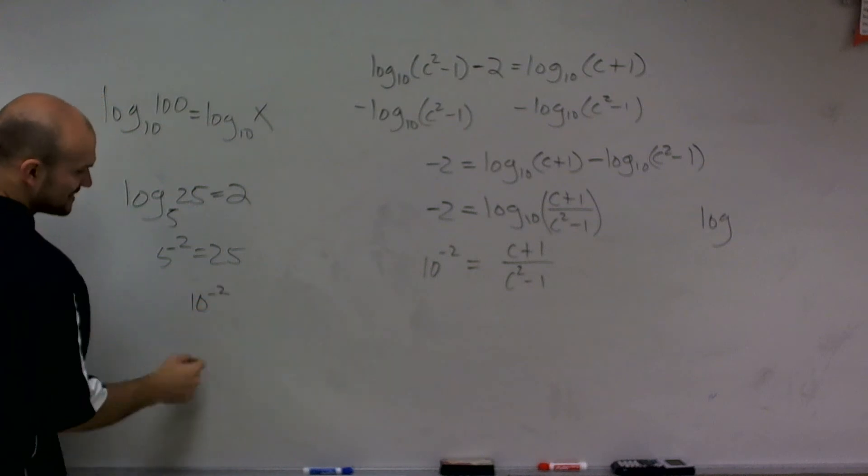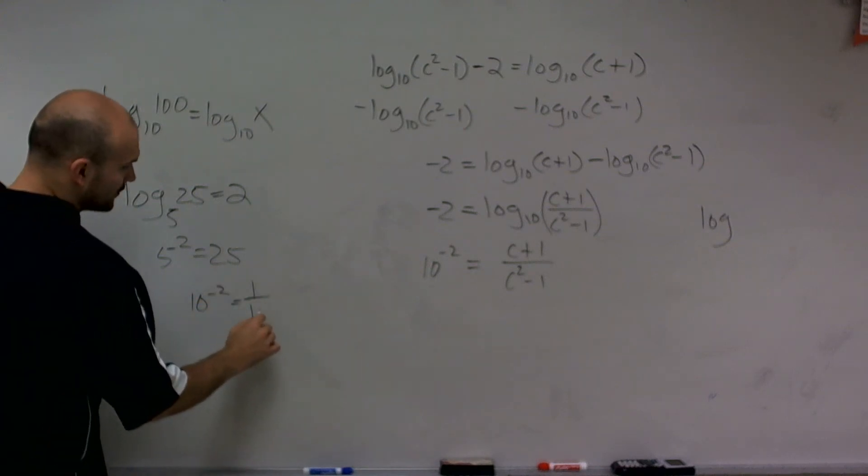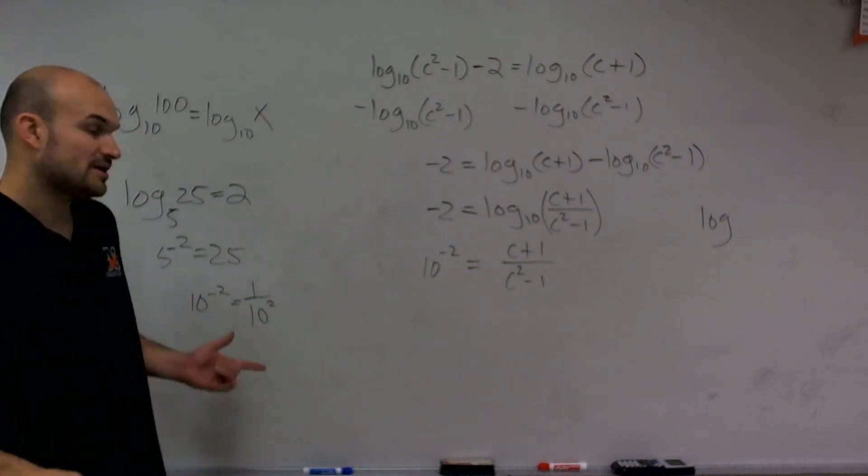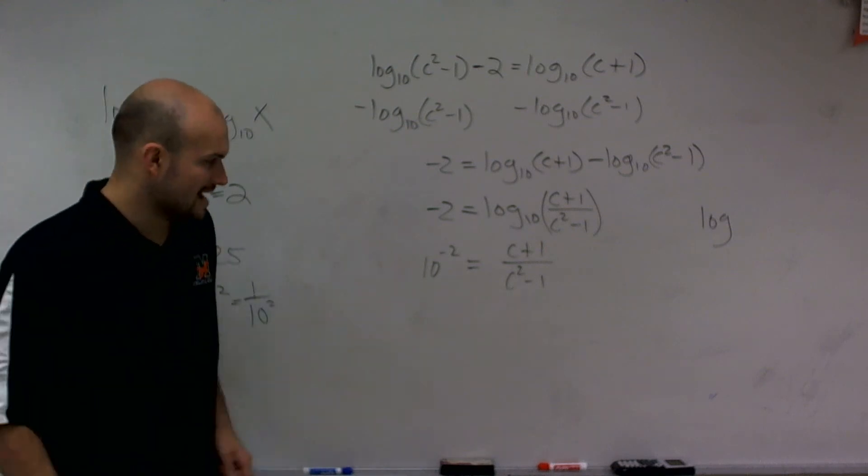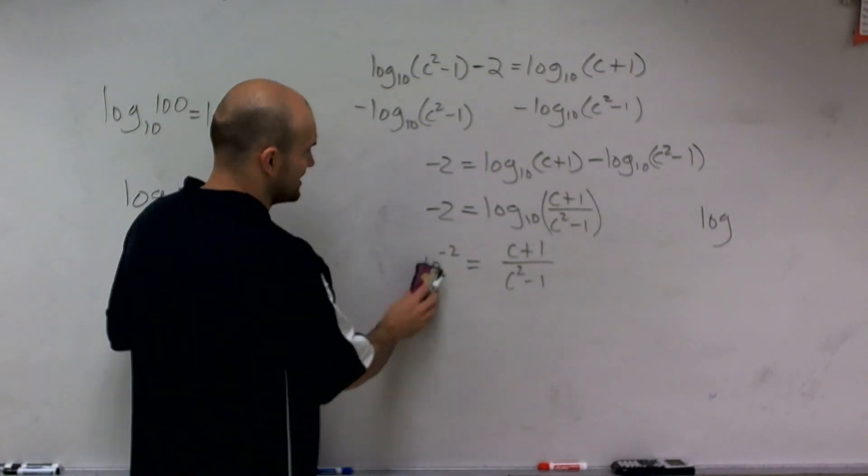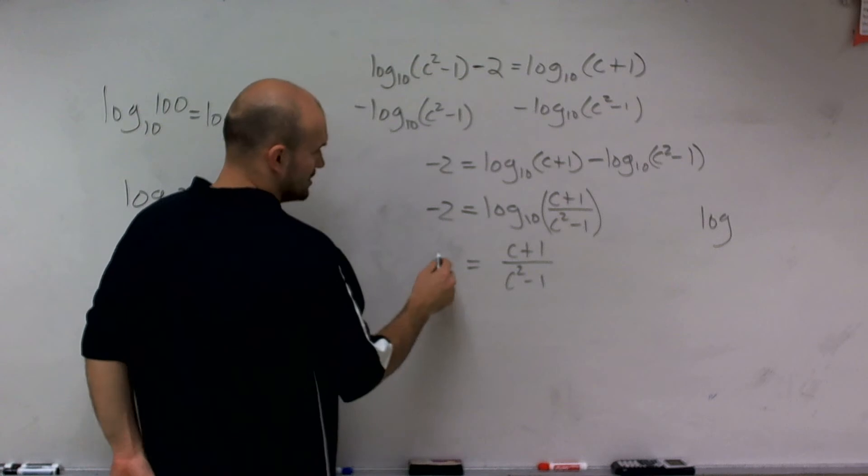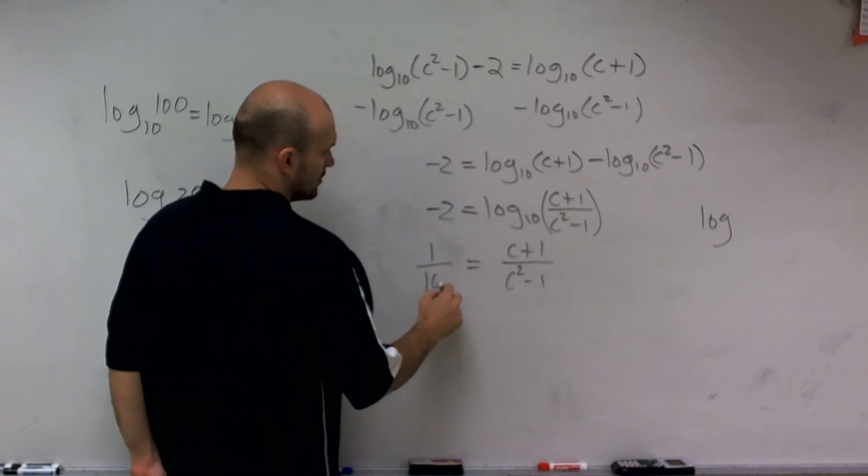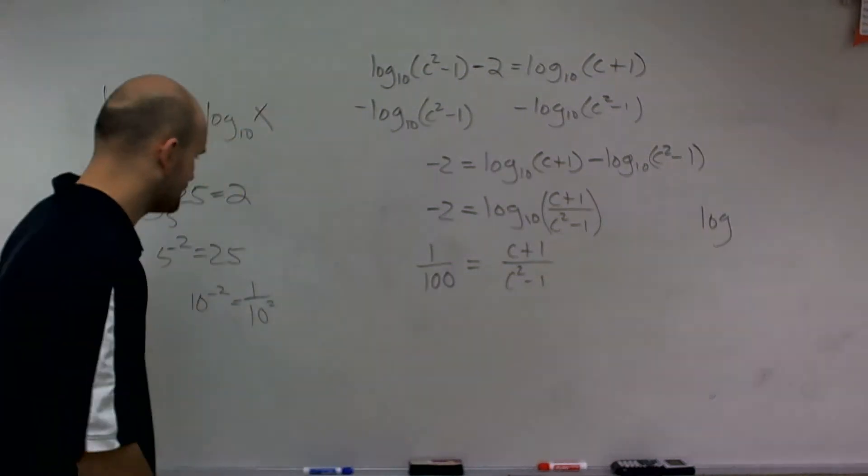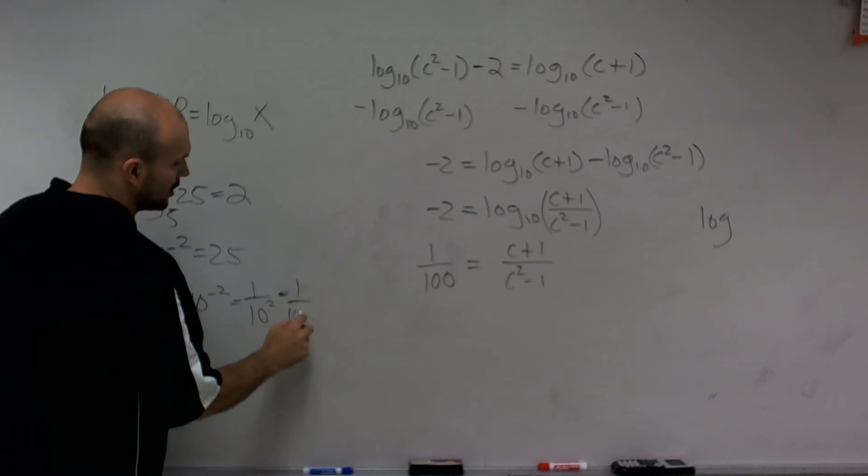And we need to remember the rules of exponent state. When I have a negative exponent, 10 to the negative second power is equal to 1 over 10 squared. When you have a negative exponent, you now put that in the denominator. So I'm going to rewrite that. So now I have 1 over 10 squared, which is 1 over 100.